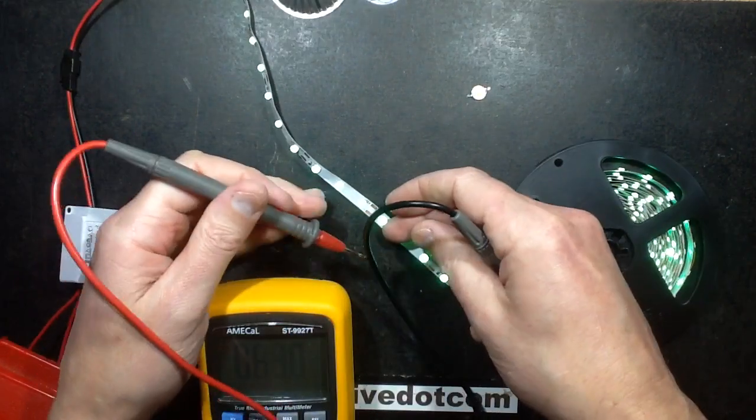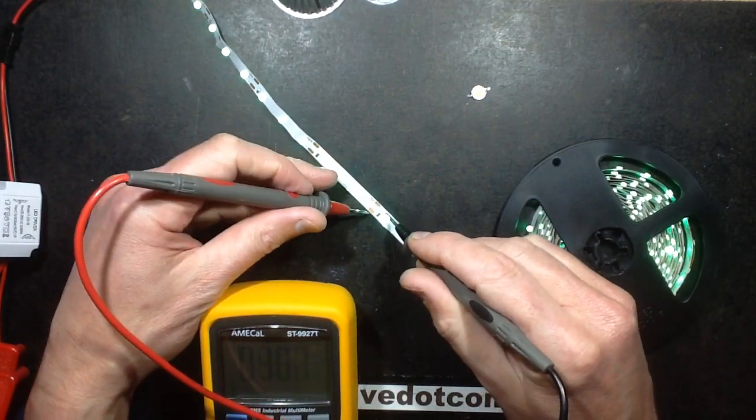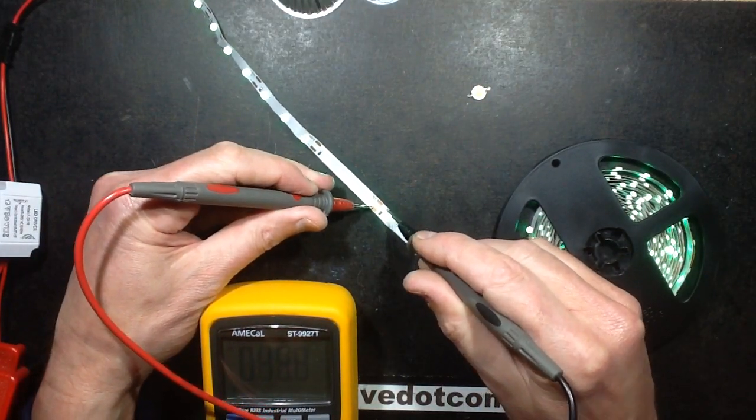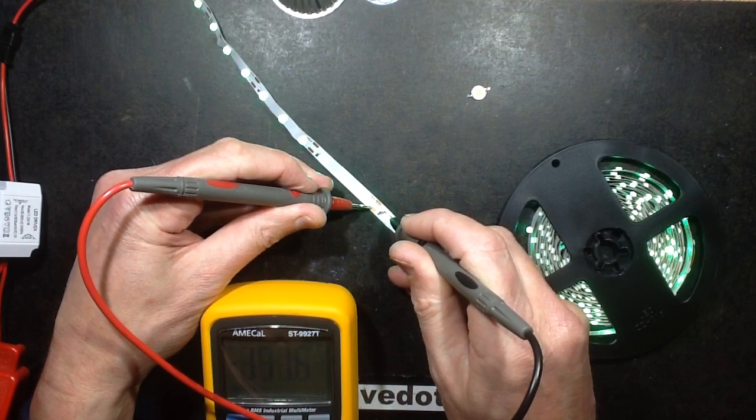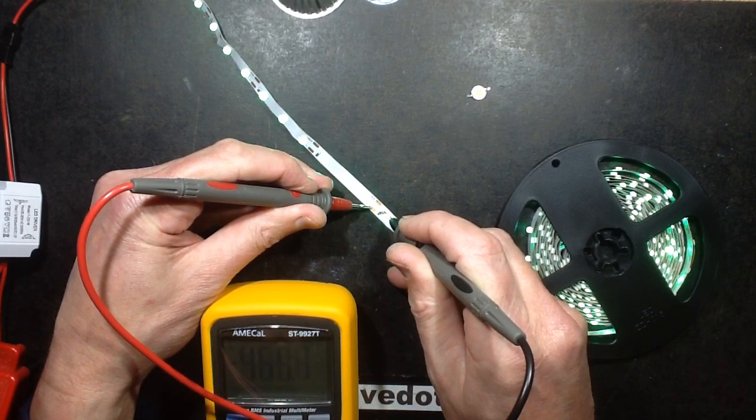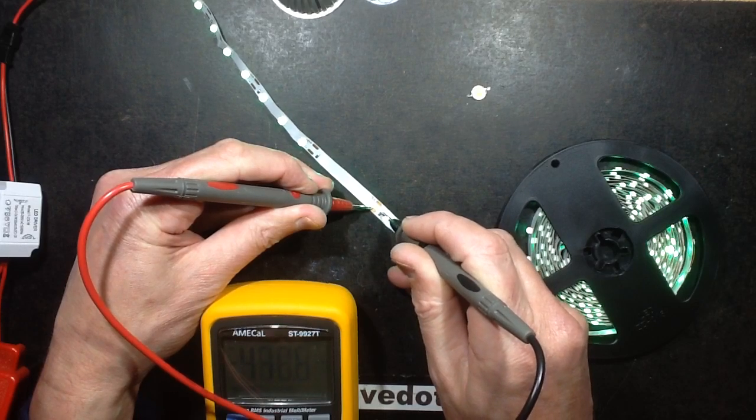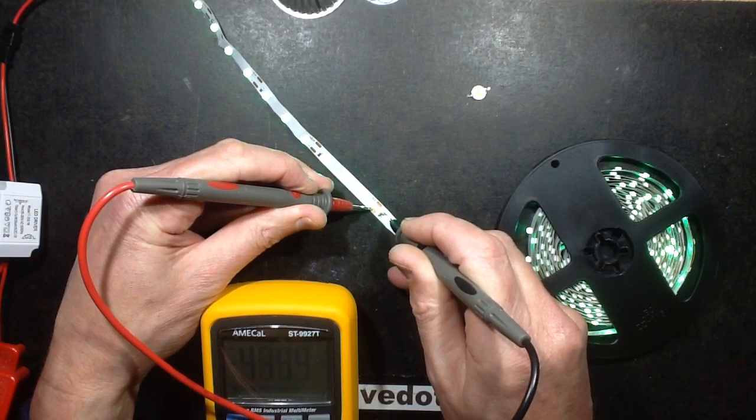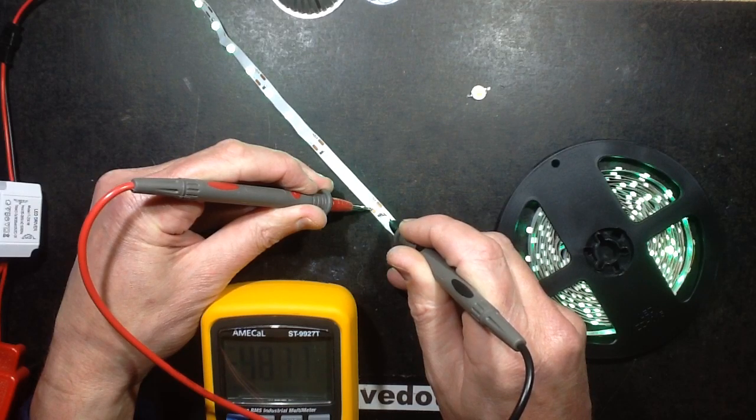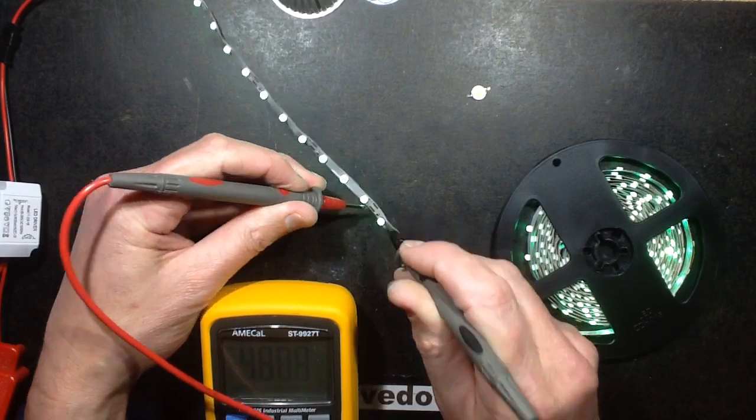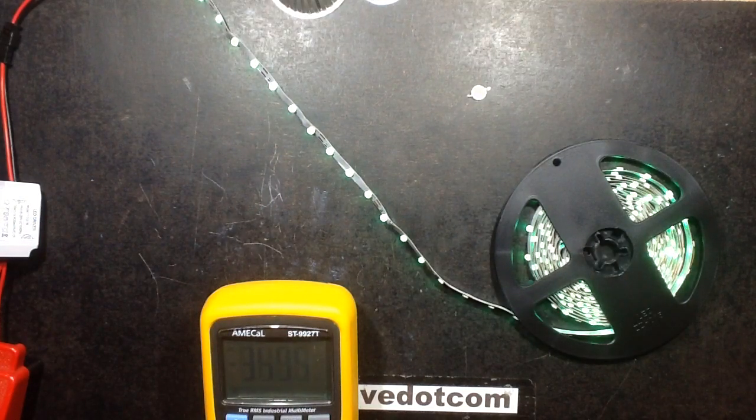So let's measure the voltage across one of those resistors. So it's connected to that pad and there. So I'm only getting about 4.48 volts across 150 ohms. So let's do the maths.